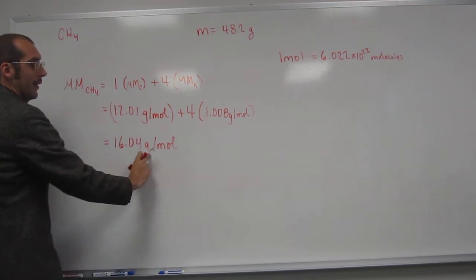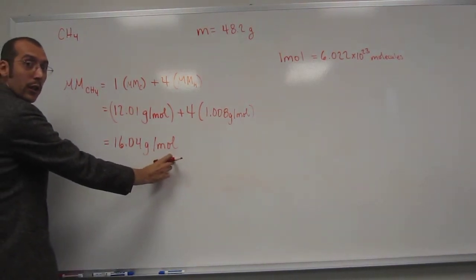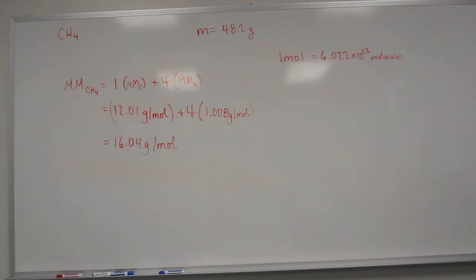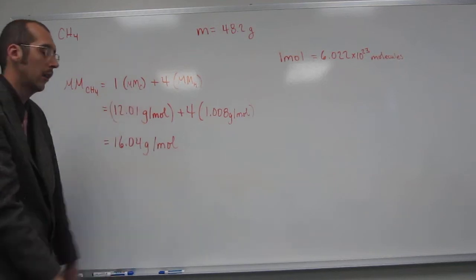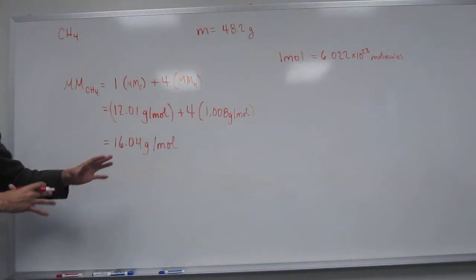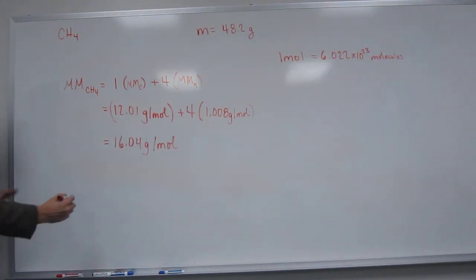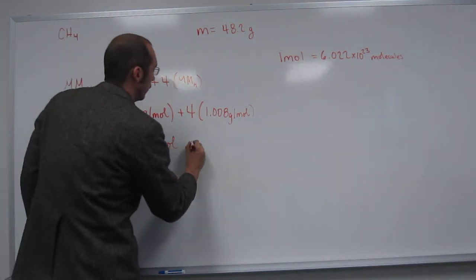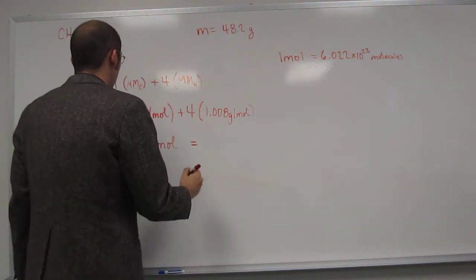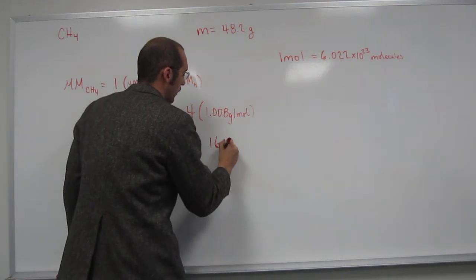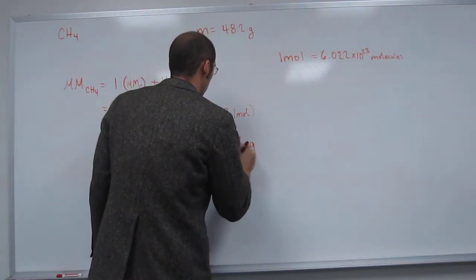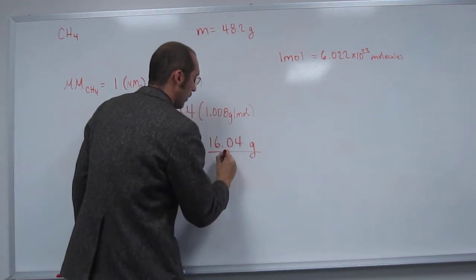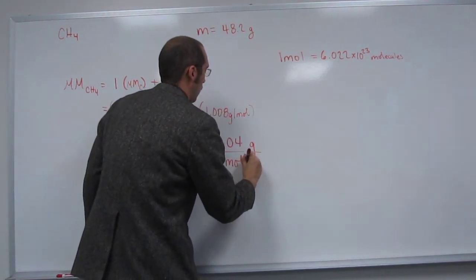And remember, those numbers are given to you on the periodic table, so it's not anything that you need to memorize. So 12.01 plus 16.04, which is four times 1.008, equals 16.04 grams per mole. Remember, this is like the text message way of writing, it's a shortcut. But in chemistry, we want to convert it to that. So this actually equals 16.04 grams divided by one mole.